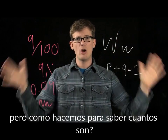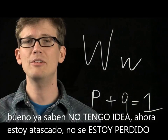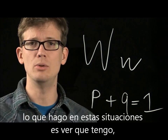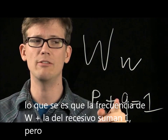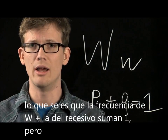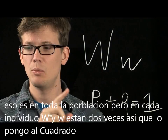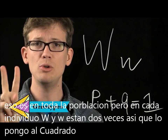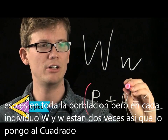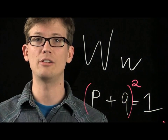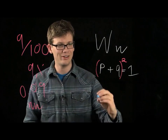When I'm stuck in situations like this, what I do is go back to what I do know. And what I know is that the frequency of big W plus the frequency of little w equals 1. But that's in the entire population. In each individual, we want to know their genotype — two different alleles. So what's happening is this is happening twice in every individual, so what we need to do is square it. And when we square that equation, if you remember algebra at all, you get p squared plus 2pq.